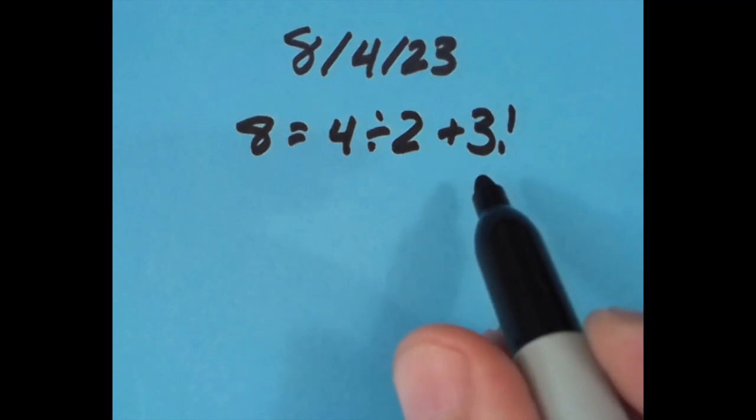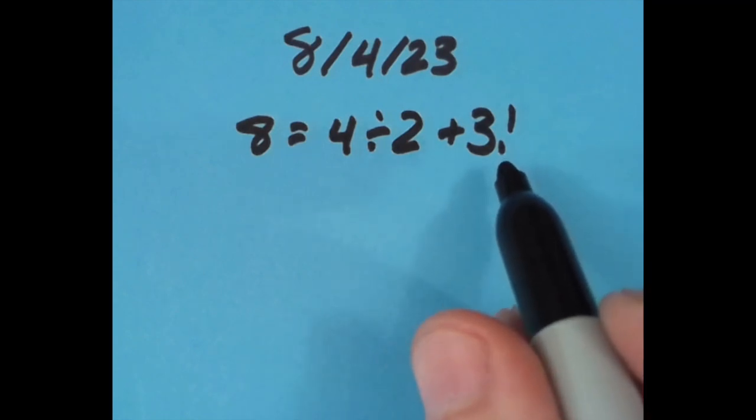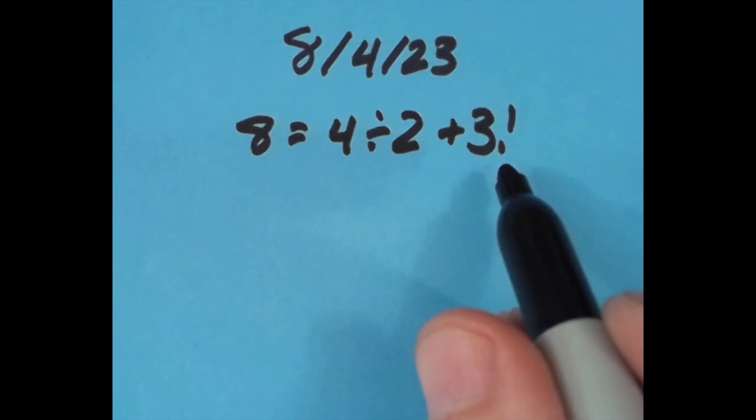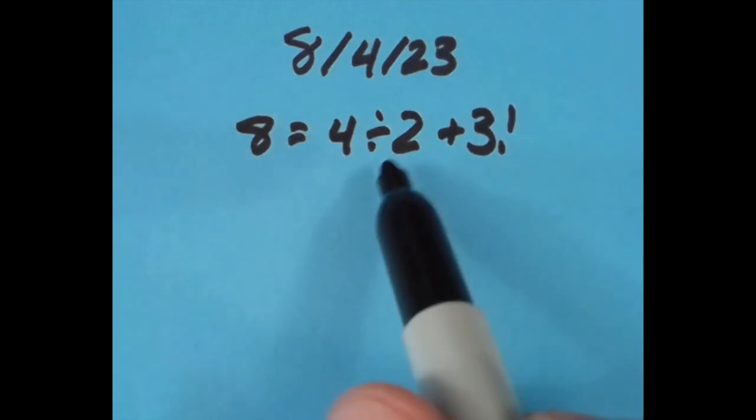Now this is 6, this is 3 times 2 times 1. That's what this exclamation point means, it's a factorial symbol, and I put more information about the factorial in the description for today's video if you're interested.